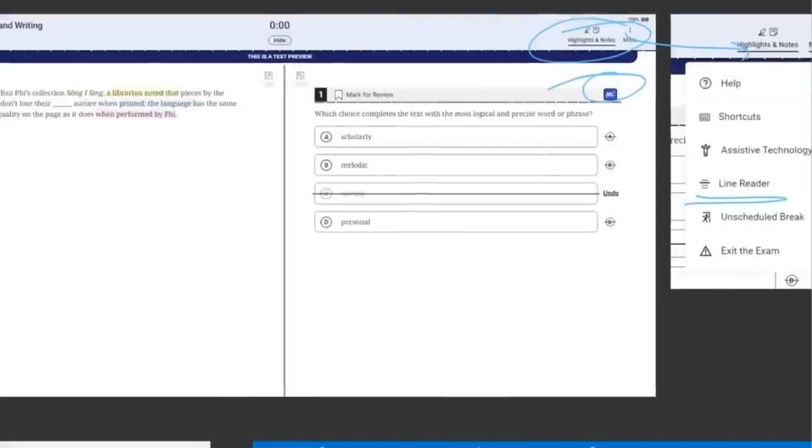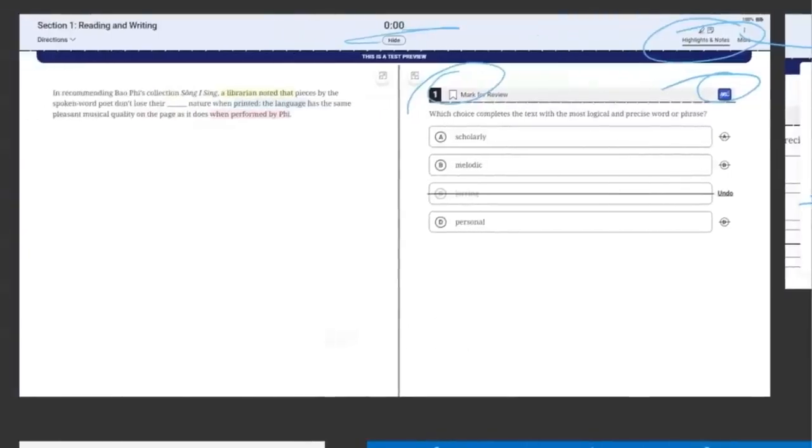We also have a question flagger, so that's this bookmarker right here, and a timer. Now on the actual test, this timer will become red when you're under five minutes. This is true for both of the sections.